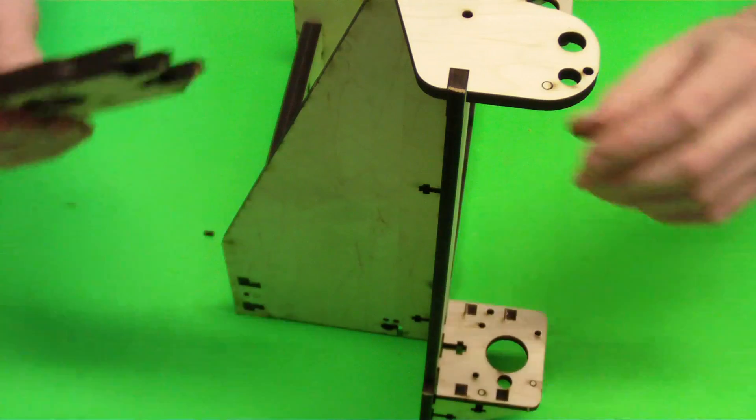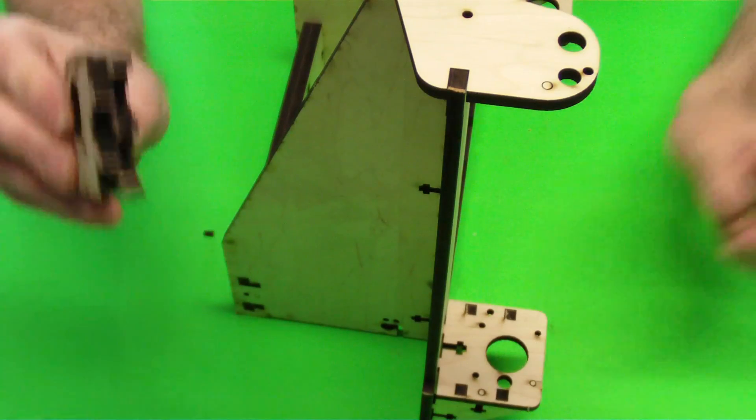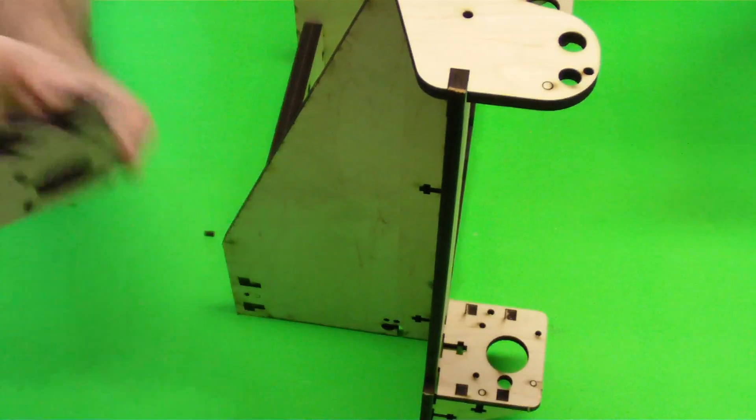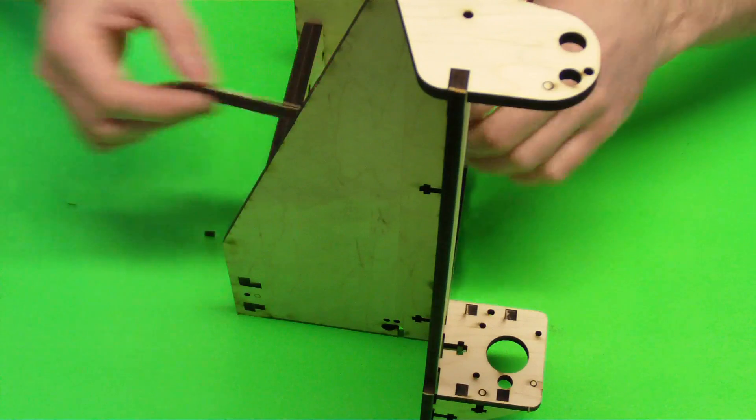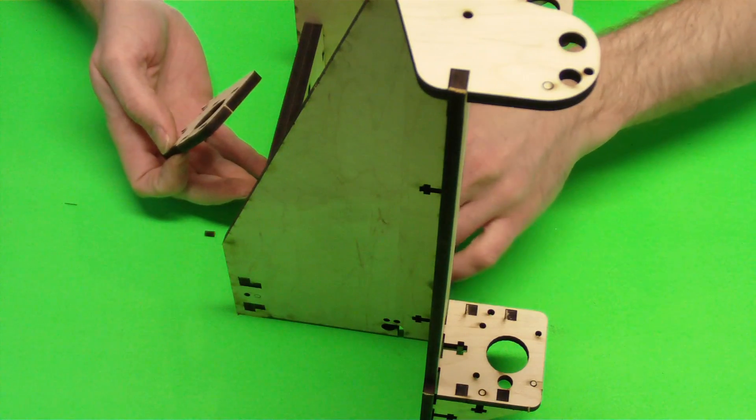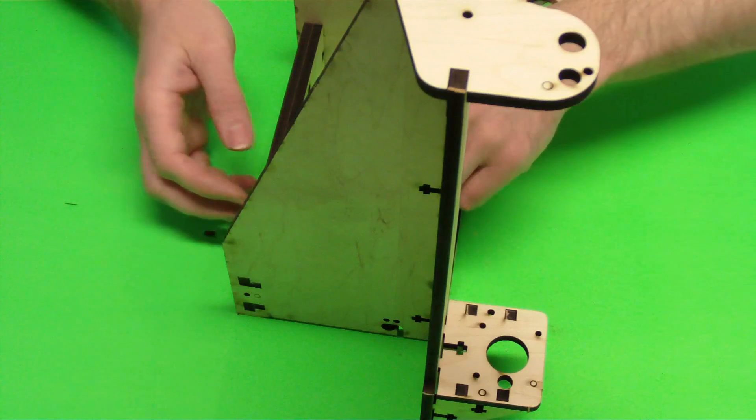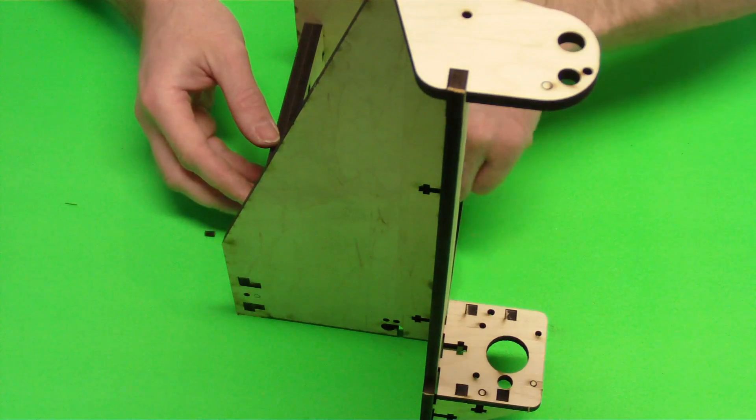There's two of them, just to make sure that it's nice and rigid. You'll notice the little legs don't align with each other, and you'll notice on these back two panels that you can't put them in the wrong one. They'll line up perfectly.